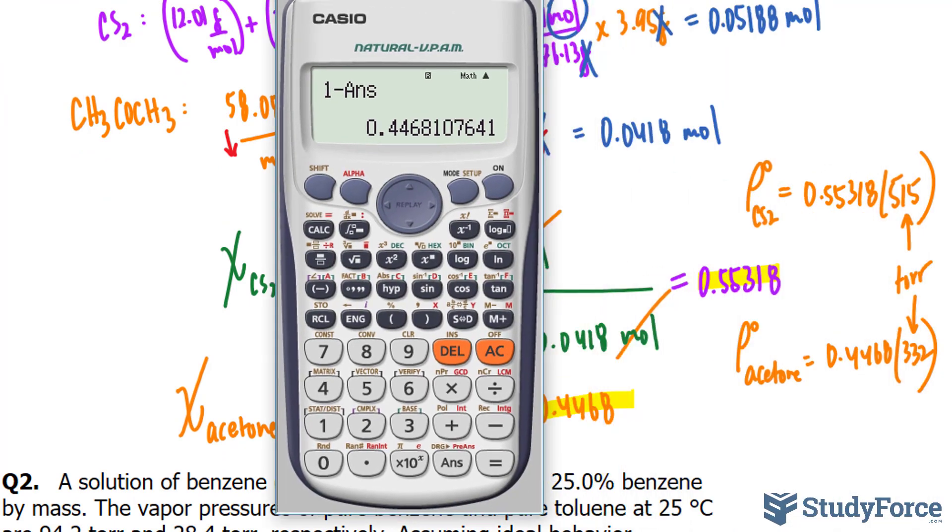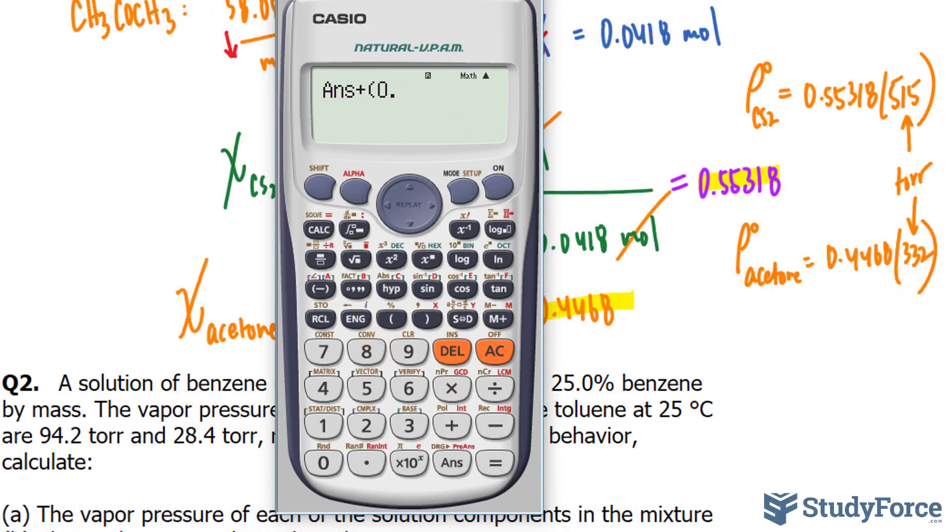Once we find these partial pressures, we add them up and we get the total. 0.55318 times 515, 284.88, let's keep that in our calculator, so I'll write down plus, 0.4468 times 332. And we get a total pressure of 433.22.